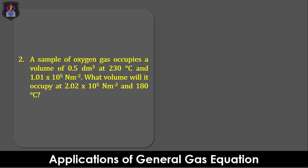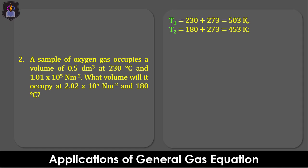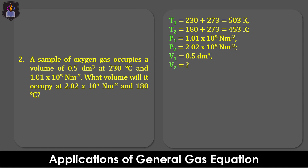Question 2: A sample of oxygen gas occupies a volume of 0.5 dm³ at 230 degrees Celsius and 1.01 × 10⁵ Newton per meter squared. What volume will it occupy at 2.02 × 10⁵ Newton per meter squared and 180 degrees Celsius? From the question, the initial temperature T1 is 230 degrees Celsius, equivalent to 503 Kelvin, and the final temperature T2 is 180 degrees Celsius, equivalent to 453 Kelvin. The initial pressure P1 is 1.01 × 10⁵ N/m², and the initial volume V1 is 0.5 dm³. The final volume V2 is to be determined.